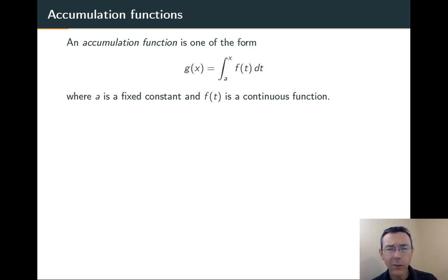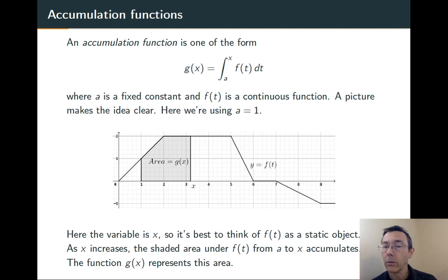This gets a lot clearer when we see a picture. So here I've graphed a function y equals f(t). And g(x) is just representing the area under that graph from a left-hand endpoint of t equals a to a right-hand endpoint of t equals x. You're supposed to imagine x getting larger or smaller and the amount of area under that graph changing. In particular, as x gets larger, you picture the area under that graph accumulating.